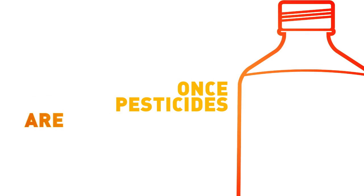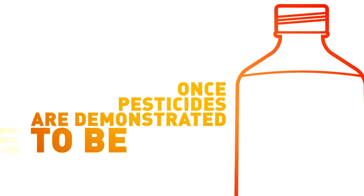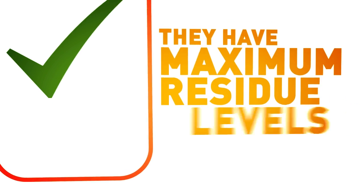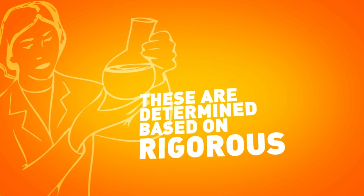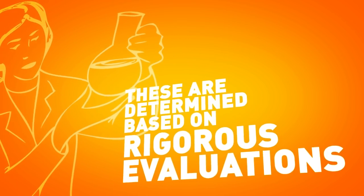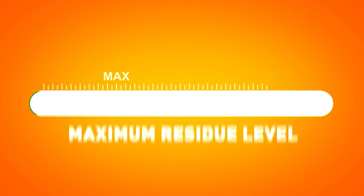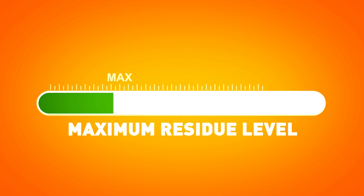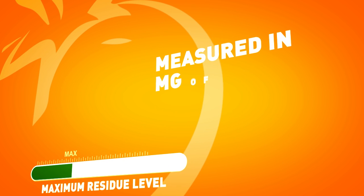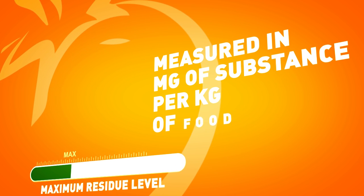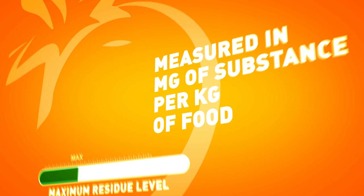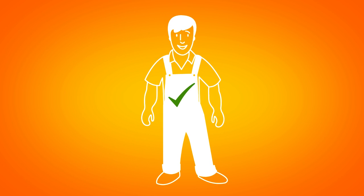Once pesticides are demonstrated to be safe for consumers, they have maximum residue levels set for them. These are determined based on rigorous evaluations. A maximum residue level is the maximum amount of residue that is legally permitted in food, measured in milligrams of substance per kilogram of food, based on good agricultural practices.